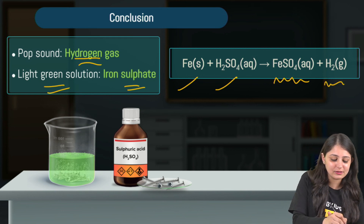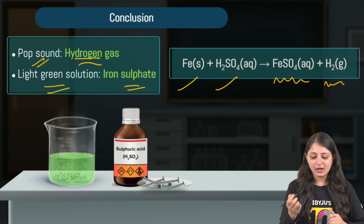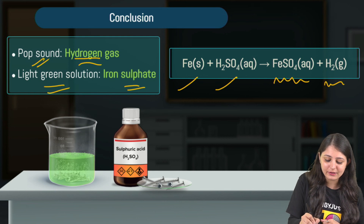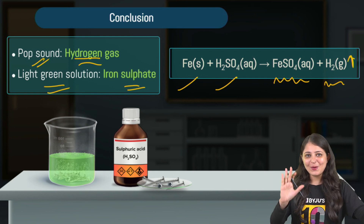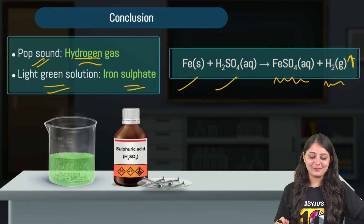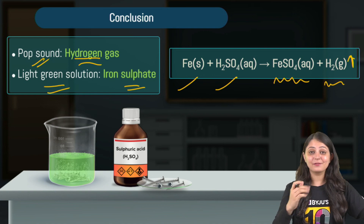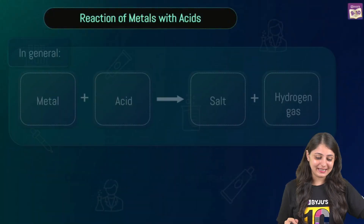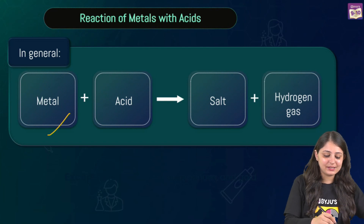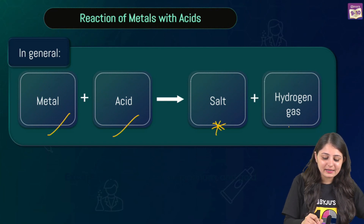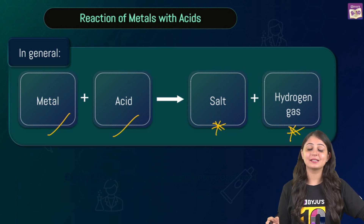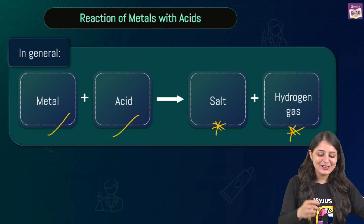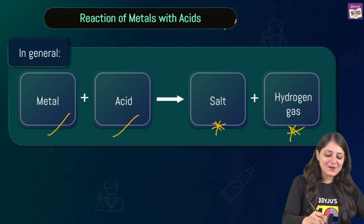Iron reacts with sulfuric acid to give ferrous sulfate and hydrogen gas — with an upward arrow for gas evolution. In general, a metal reacting with an acid gives you salt and hydrogen gas. The salt in this example is ferrous sulfate.